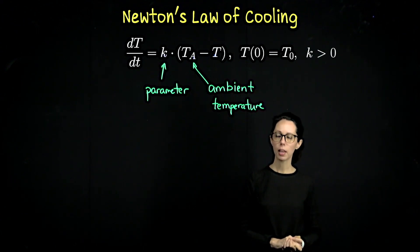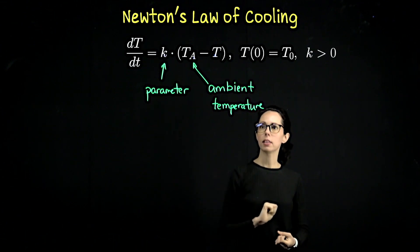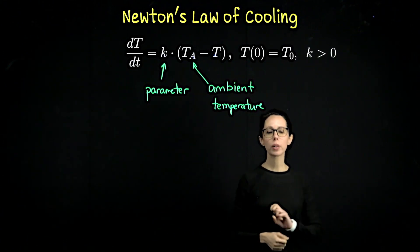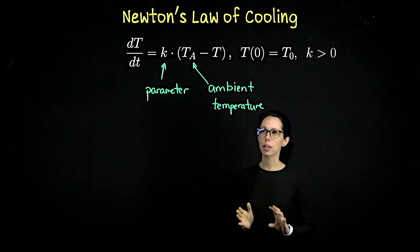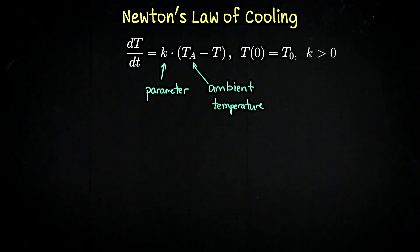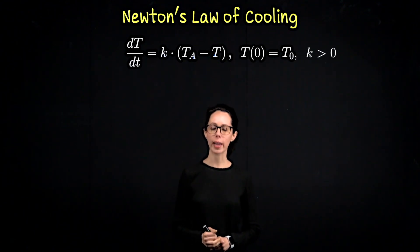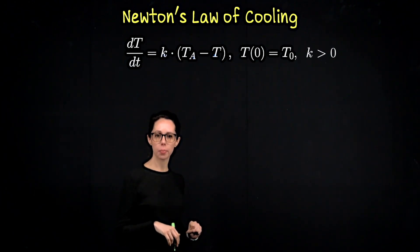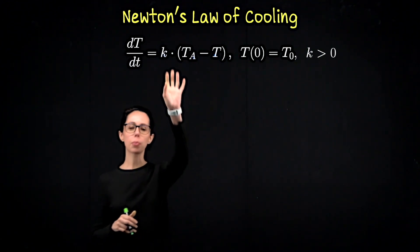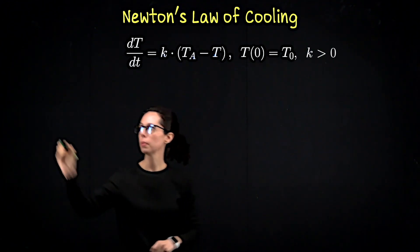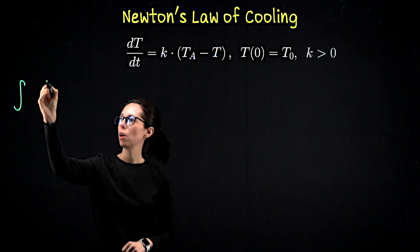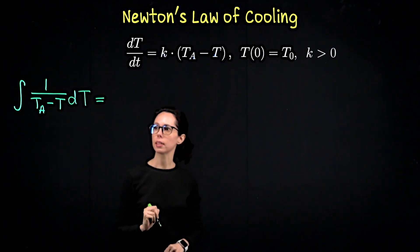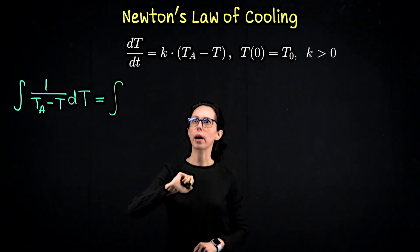We will separate this differential equation to solve for the temperature over time, then work through one example about a cup of coffee. To get to an explicit form for capital T, let's use separation of variables. We divide by the difference between the ambient temperature and the temperature capital T, leave the parameter k on the right-hand side, and bring d little t over. The left-hand side is the integral of one divided by (T_a minus T) with respect to capital T, and on the right-hand side we have k d little t.